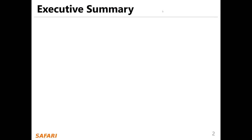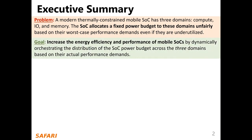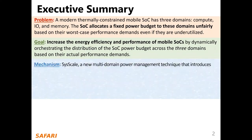First, I will give a high-level overview of the talk. A modern thermally constrained mobile SoC has three domains: compute, IO, and memory. The SoC allocates a fixed power budget to these domains unfairly based on their worst-case performance demand, even if they are underutilized. Our goal is to increase the energy efficiency and performance of mobile SoC by dynamically orchestrating the distribution of the SoC power budget across the three domains based on their actual performance demand. To this end, we propose C-Scale, a new multi-domain power management technique that introduces three mechanisms.